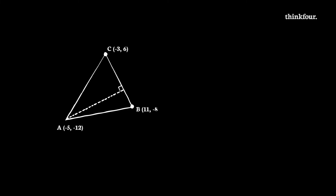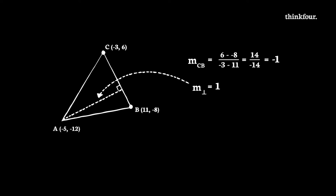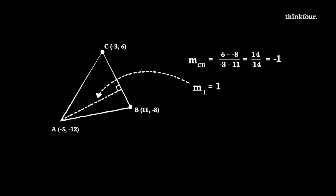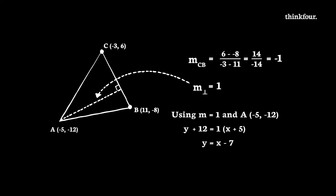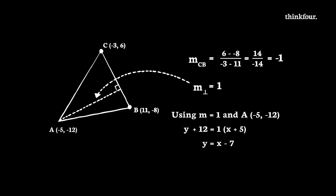Using this triangle, we're going to find the equation of the altitude from point A. We can't find the gradient of the altitude immediately, as we don't know the coordinates of where it meets the other side. Instead, we'll use our knowledge of perpendicular gradients. The gradient of the opposite line, line CB, is negative 1. The perpendicular gradient is 1, so our altitude has gradient equal to 1. Using this gradient and point A, we can find the equation of the altitude line, which is Y equals X minus 7.